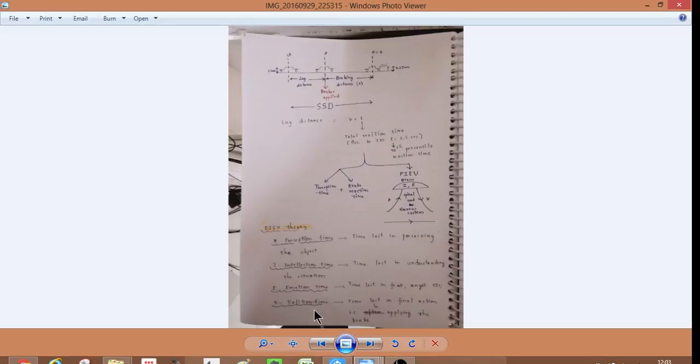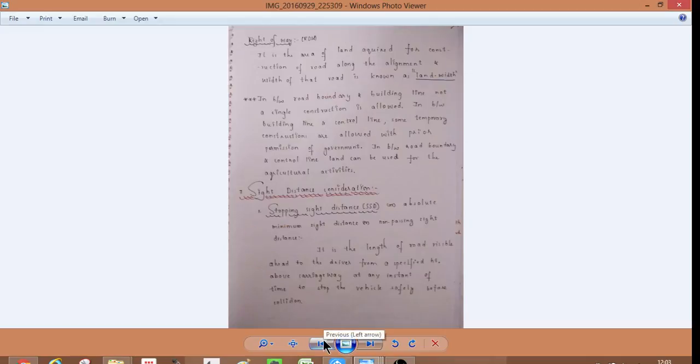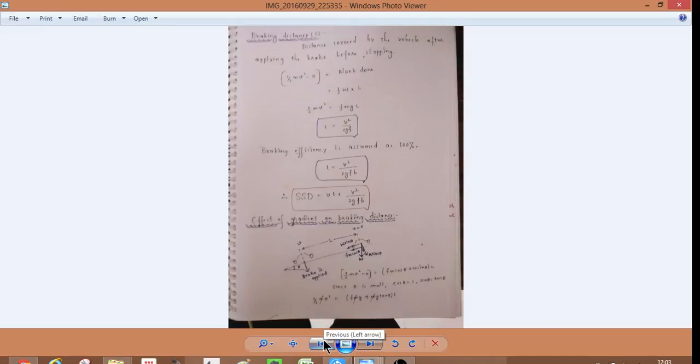So SSD means safe stopping sight distance. So it is VT plus V squared by 2GF. V, brake is V is the, and then the exchange of brake. P is the perception, interaction, emotion, evolution. So, and then, V square by 2GFB.